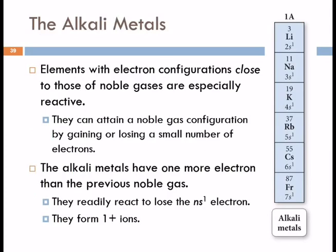Let's look at the alkali metals, Group 1A. All of these guys have one valence electron.